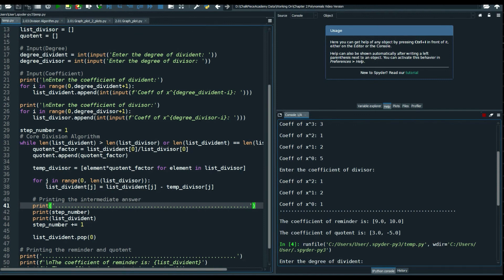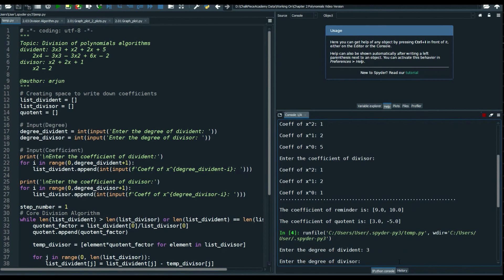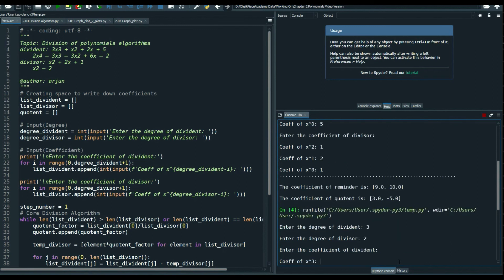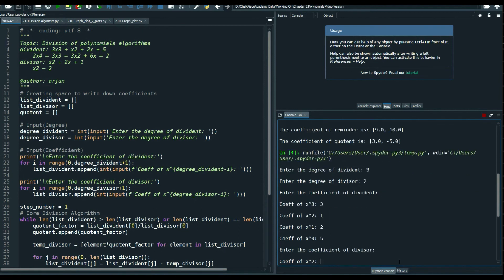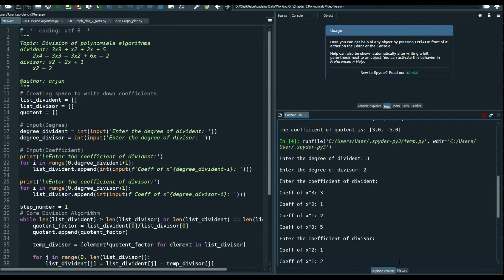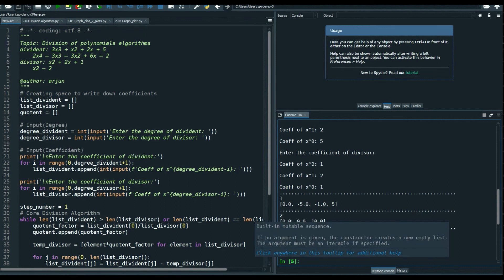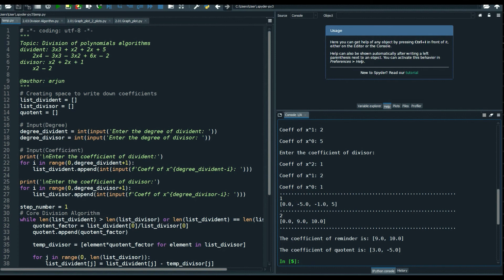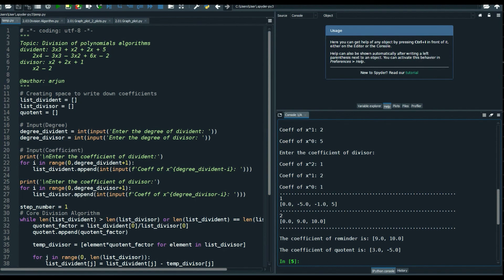This process of putting in the data is must. So we have the dividend to be degree to be 3, divisor to be 2. The quotient is 3, 1, 2, 5 and this is 1, 2, 1. So in the first step we're looking at the quotient to be 0, minus 5, minus 1 and 5. That was your remainder for the new divisor. 0, minus 5, minus 1 and 5.